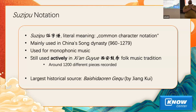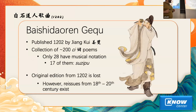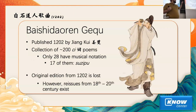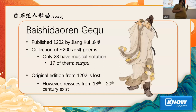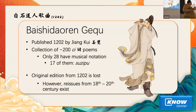The largest historical source for the Zipu annotation is the so-called Baishi Daoren Guiyu by the poet and composer Zhang Gui. This collection, which has the meaning 'Song book of White Stone Daoist,' was published in 1202. It's a collection of 200 poems — most of them are so-called Zipu poems, a special form of poetry — and 28 have musical notation. Actually, it's three different notations: one is very well studied, another is also well studied, but 17 of them are in this Zipu notation, which is not so well studied.